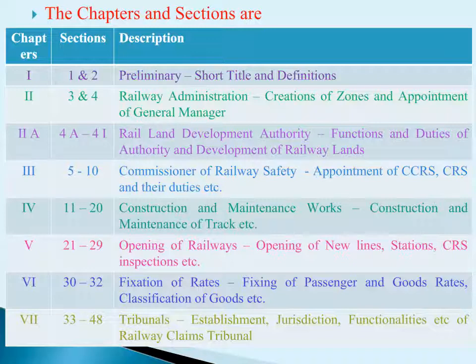Chapter 2: Railway Administration contains two sections, Sections 3 and 4. It covers mainly the creation of zones and appointment of the General Manager.